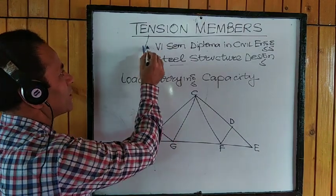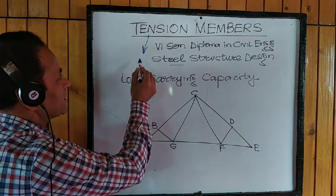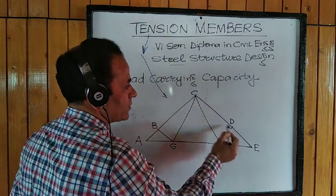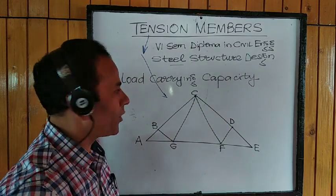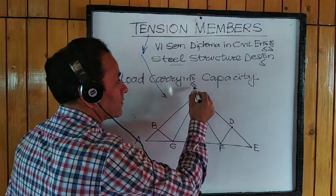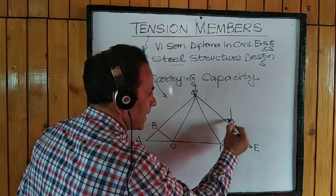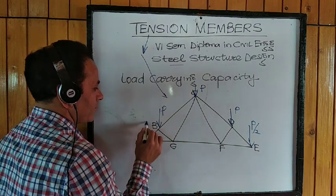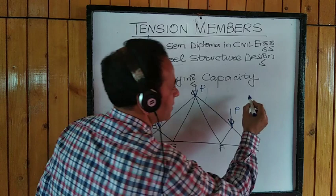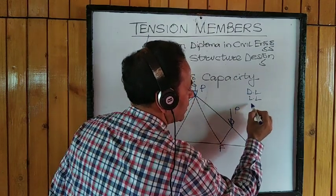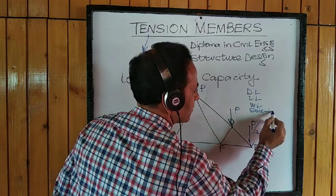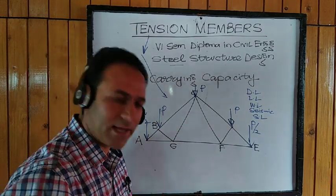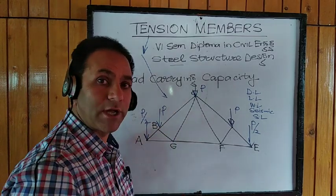First of all, we see what a tension member is all about. This basically goes back to a steel roof truss. A steel roof truss consists of a number of members, and there are certain loads which act on the nodal points. We assume that all the load is distributed and acting over these nodal points — A, B, C, D, E, F, and G. This load consists of various loads: dead load, live load, wind load, seismic load, snow load, etc.